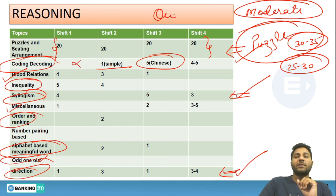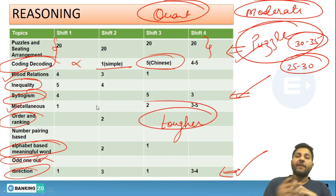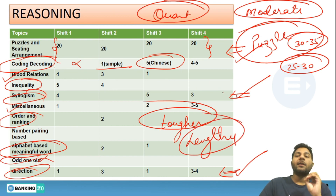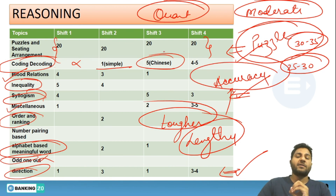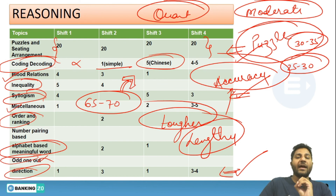The quant section was a bit lengthy, as I predicted in a live session a couple of days back — a tougher paper meaning a lengthier paper. You won't get lots of high-level questions, but you will get lengthy questions where your speed and accuracy will matter, and that will frustrate you. Overall, if you have attempted between 65 to 70, that would be enough, as the majority of aspirants reported attempting between 65 to 70.